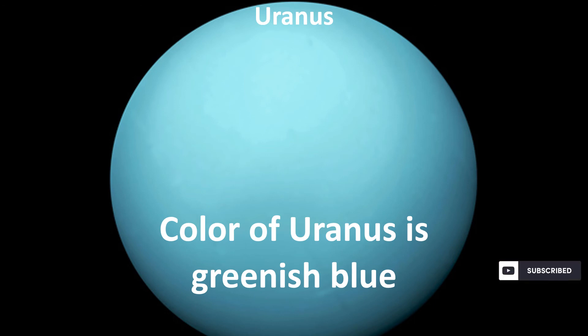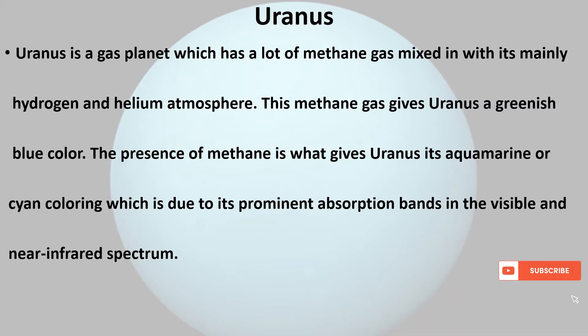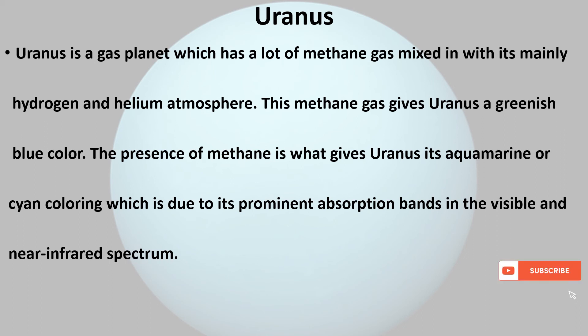The color of Uranus is greenish blue. Uranus is a gas planet which has a lot of methane gas mixed in with its mainly hydrogen and helium atmosphere. This methane gas gives Uranus a greenish blue color. The presence of methane is what gives Uranus its aquamarine or cyan coloring, which is due to its prominent absorption bands in the visible and near infrared spectrum.